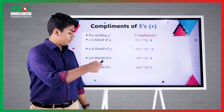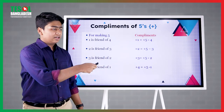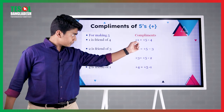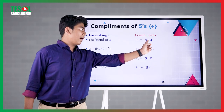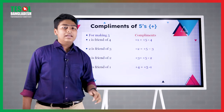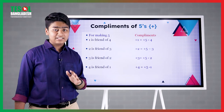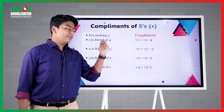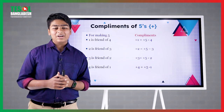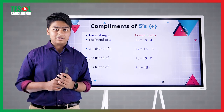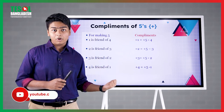Now here we can see these are the complements. Plus 1 equals to plus 5 minus 4. Before we move on to the complements, one thing that is mandatory to know: there are 2 captains of numbers. When we work with numbers, there are 2 captains — one is 10, another is 5.